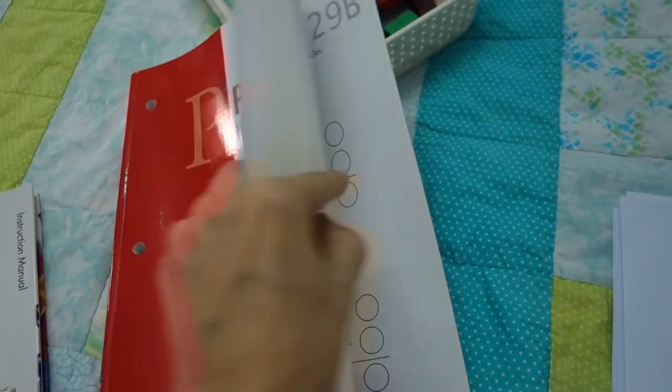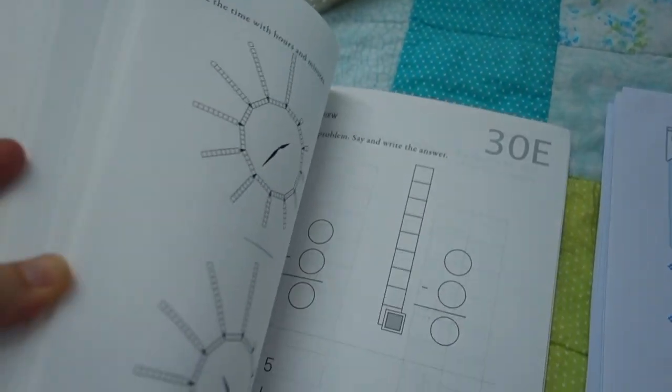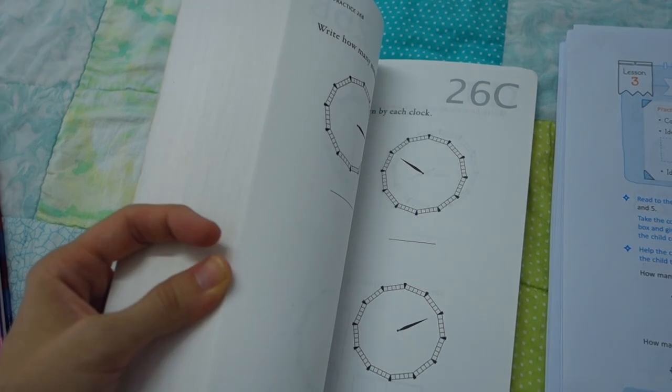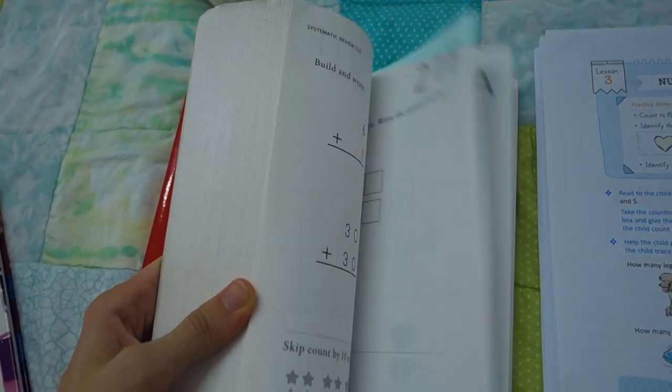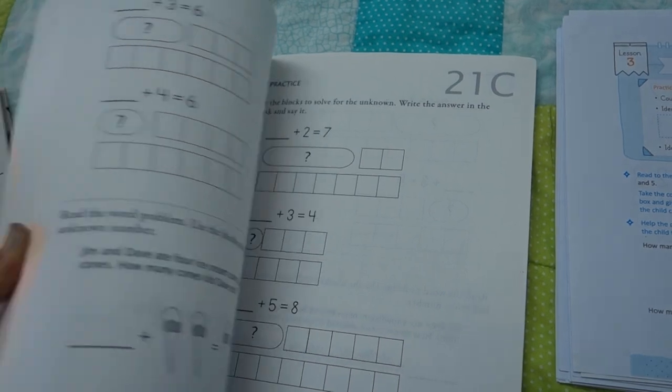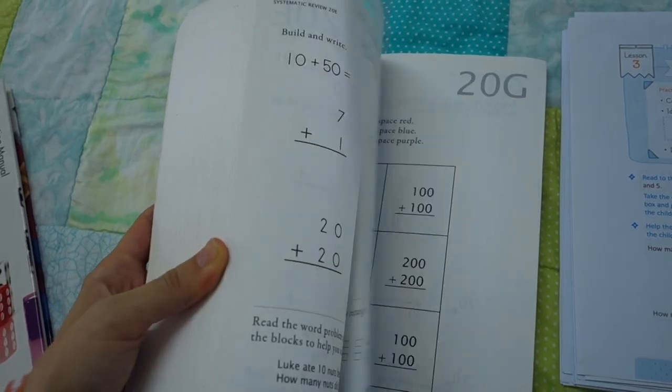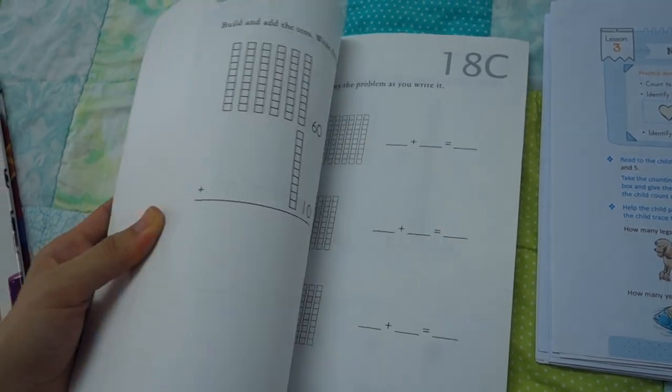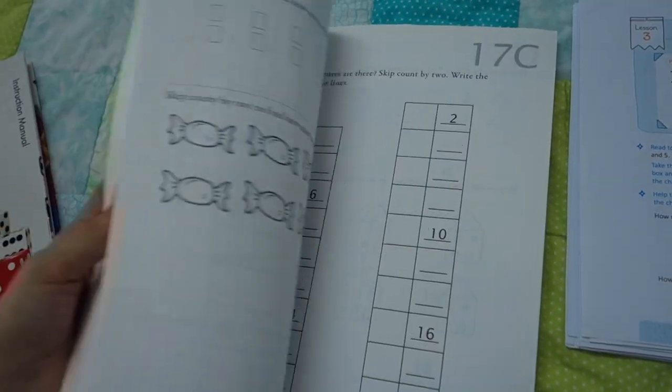Then it has the student workbook, which is quite thick here. It has 30 lessons meant to take approximately a week. But of course, you're going to go at your pace. 30 lessons and then you have the A, B, C, D, E, F, G pages for each lesson within that workbook.